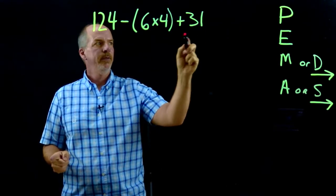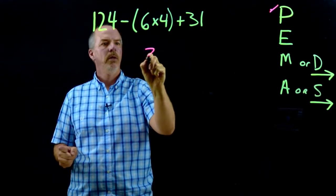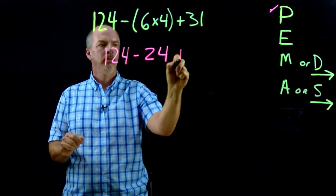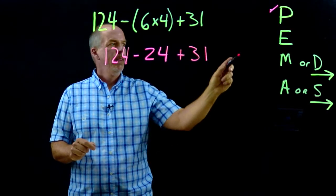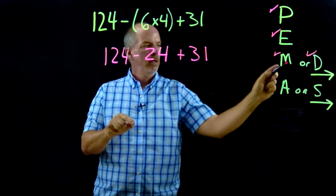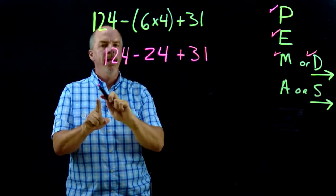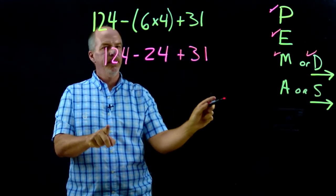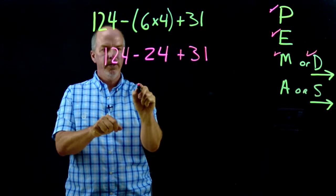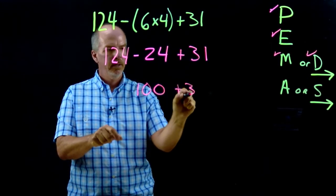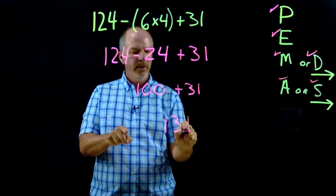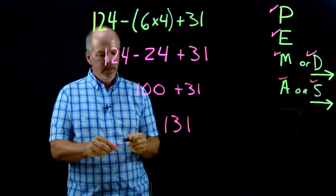I'm looking for parentheses — I do have parentheses, so 6 times 4 is 24, and I bring everything else down. There's no exponents, no multiplication or division. But I do have addition and subtraction, working from left to right. Subtraction comes first, so 124 minus 24 is 100. Then I have plus 31, so I do my addition: 100 plus 31 gives 131 as my simplified evaluated answer.